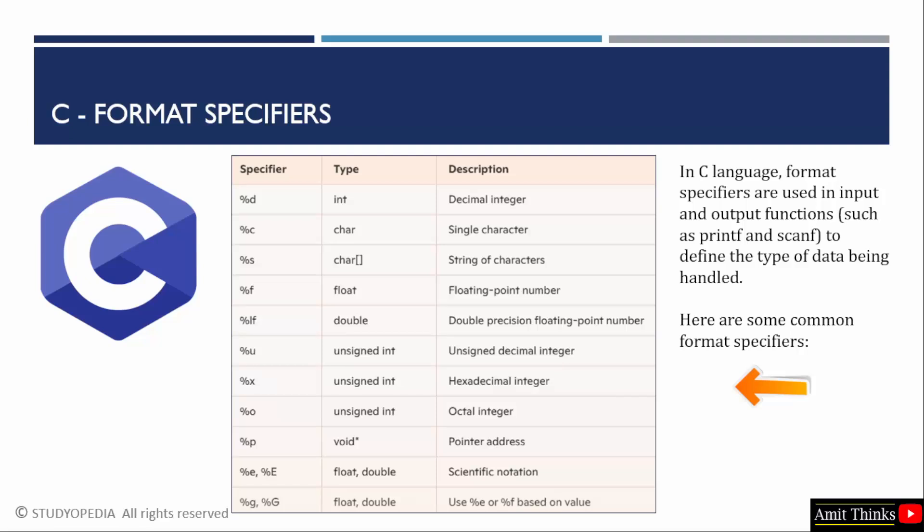For integers, we generally use %d. For characters %c. String is an array of characters, so for that, use %s. It's written string of characters, you can see.